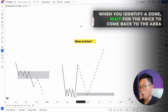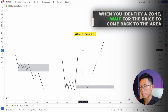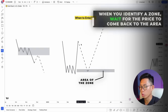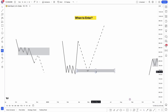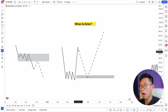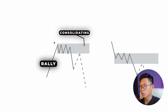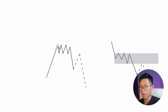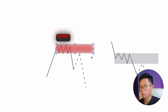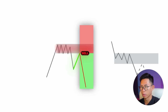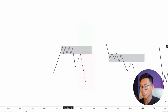Once you identify a zone, you must wait for price to come back to the area of that zone — only then can you enter the trade. For example, here price rallies, starts consolidating, then starts dropping. We draw a little supply zone here, then wait for price to eventually come back up to that supply zone, touch it, and that's when we enter a sell position. Price will then continue going back down in the overall downtrend.